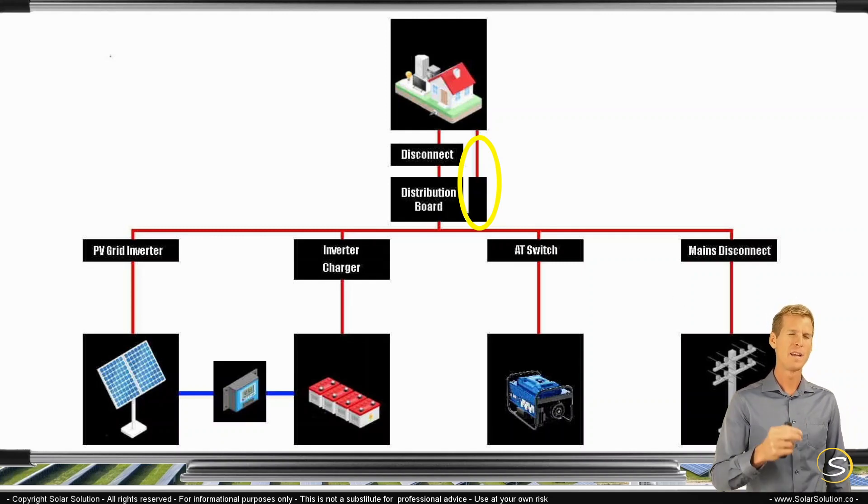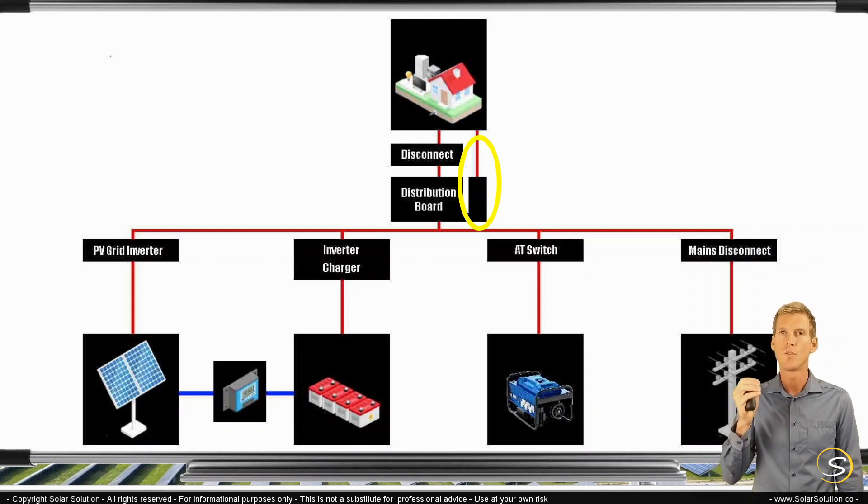So you could say, okay, which components are essential, which ones are critical and they should always function, whatever happens. If I'm running on a generator, if I'm running on the batteries, if I'm running only on solar, I want to make sure that these loads, these consumers would always operate.